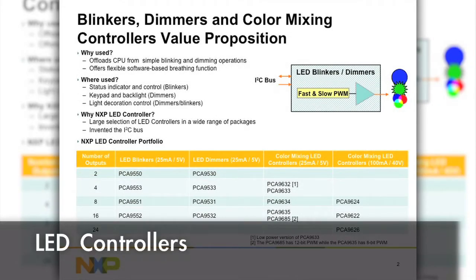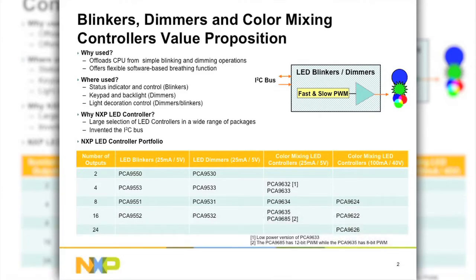I would like to introduce you to NXP's LED controllers for blinking, dimming, and color mixing applications. An LED controller is used to offload the CPU from blinking and dimming operations so that the CPU may perform other tasks. The LED controller may be programmed with the blink rate and/or dimming pattern of each individual output. LED controllers are used in applications requiring status indicators where an LED needs to be turned on or off, or blink at a certain rate to indicate a particular status.